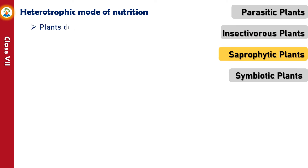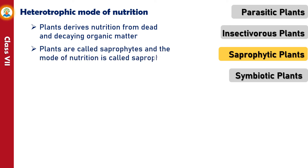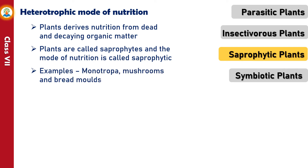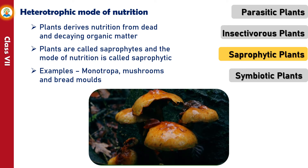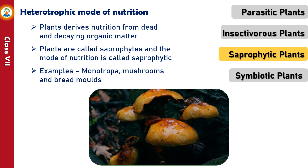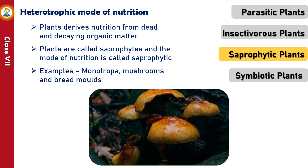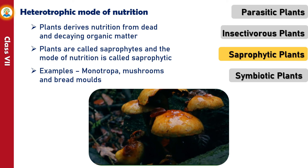Some plants derive nutrition from dead and decaying organic matter. Such plants are called saprophytes and the mode of nutrition is called saprophytic. Examples of saprophytes are Monotropa, mushrooms and bread molds. Saprophytes release digestive juices on dead and decaying matter, converting it into simpler forms, which they then absorb to obtain nutrition.